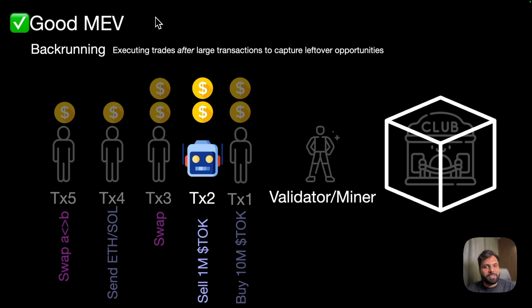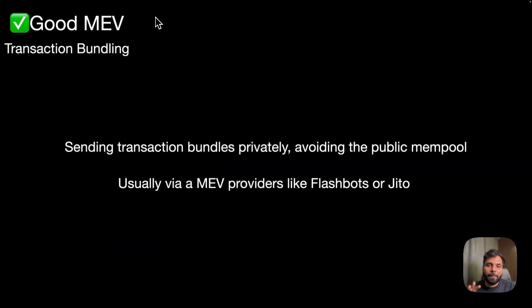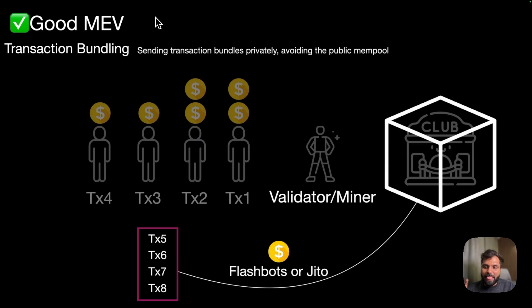Another example is transaction bundling, where transactions are bundled and sent privately, avoiding the public mempools so that no one can see those transactions and front-run them. Usually, this is done via a MEV provider like Flashbots for Ethereum and Jito for Solana. The transactions are bundled and sent via the MEV provider directly to the blockchain or a validator client which is specialized to receive and process bundles, along with a tip for the MEV provider added with the gas fee.